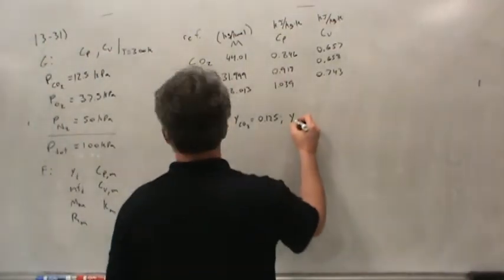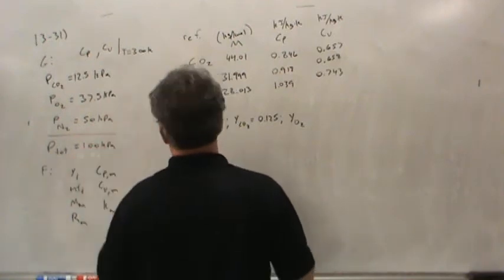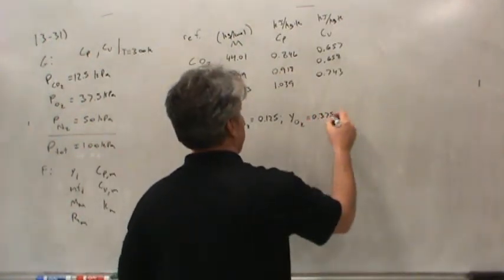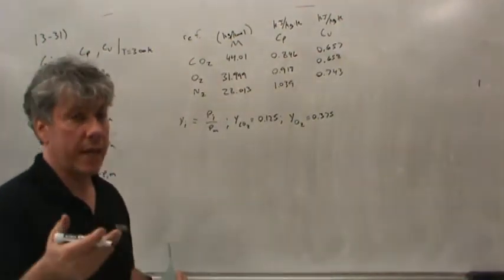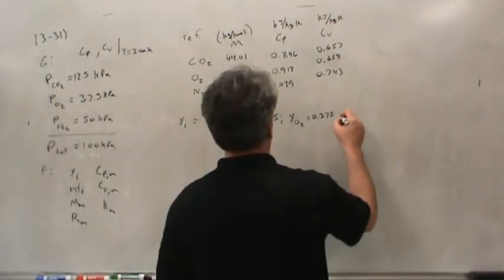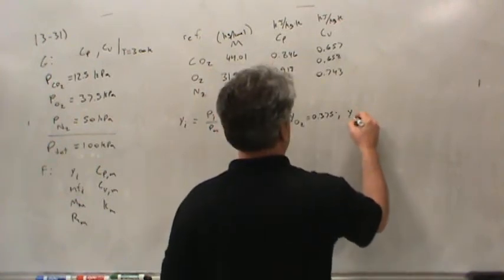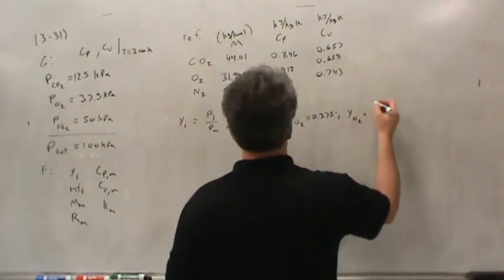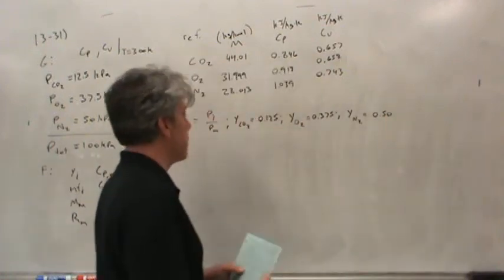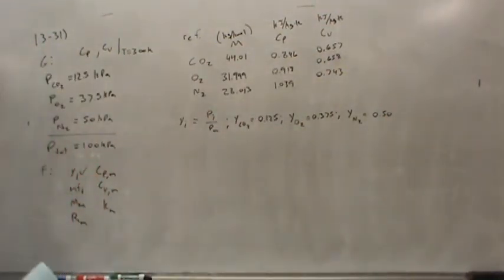The mole fraction for oxygen is 0.375, or 37.5% by molecule count. For nitrogen, that one's really easy: 0.50. So we've taken care of all the Y_i mole fractions.